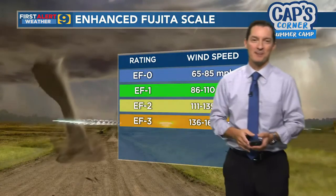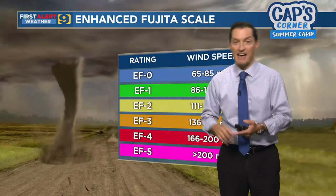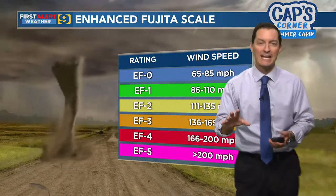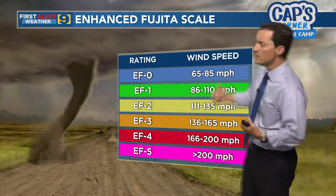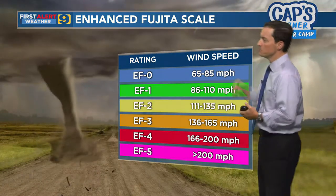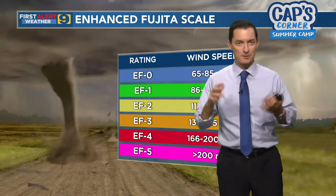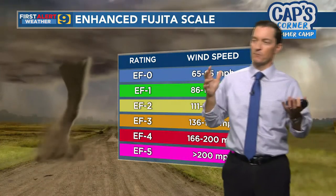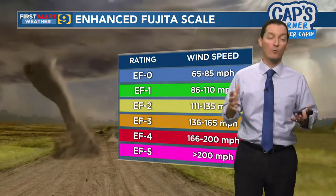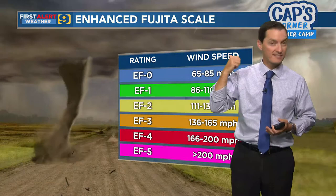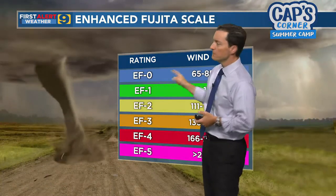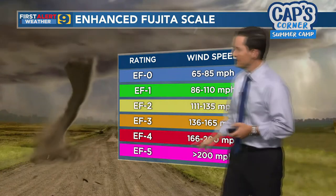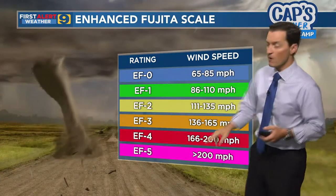Just like we talked about the Saffir-Simpson scale for ranking hurricanes, we also have a scale for ranking tornadoes — it's called the Enhanced Fujita Scale. Dr. Ted Fujita was a famous, renowned tornado researcher, so the scale is named after him. It goes from EF0, the weakest tornadoes, to EF5, which are the strongest.